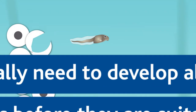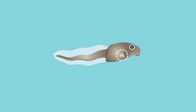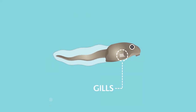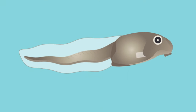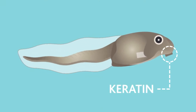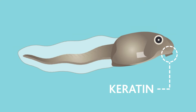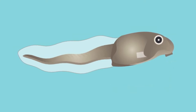Tadpoles live in water and absorb oxygen from the water through gills, like a fish. Unlike frogs, tadpoles have tails as well as horny jaws made of keratin, surrounded by rows of bristly teeth on an oral disc. They use this to graze on algae, decaying plant matter and aquatic plants.